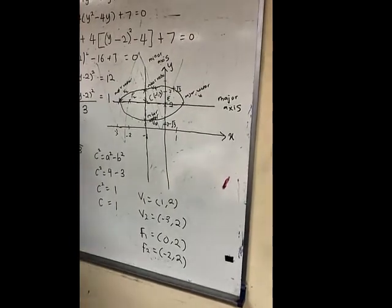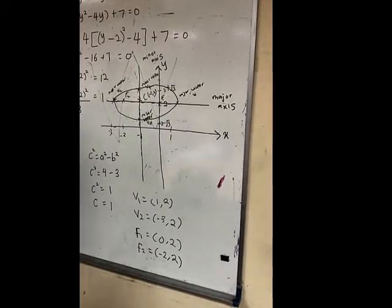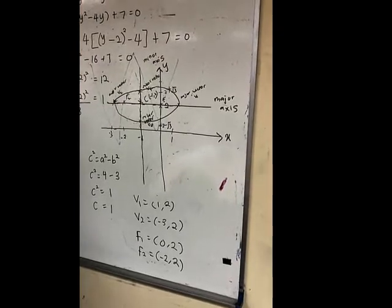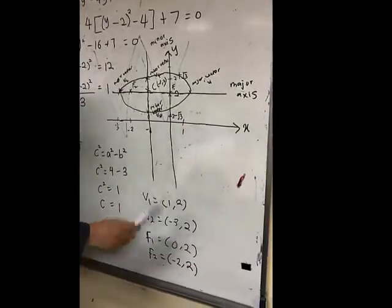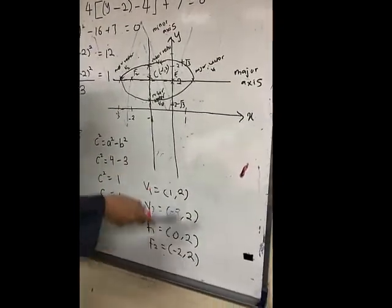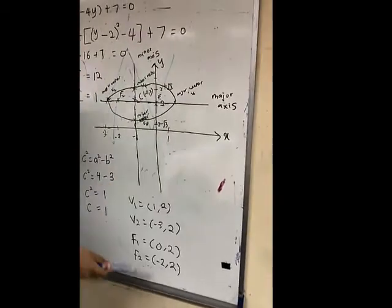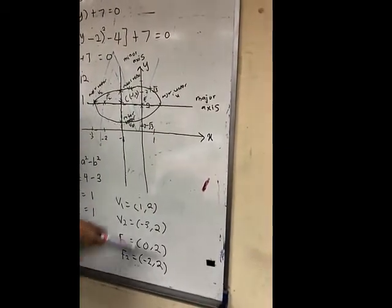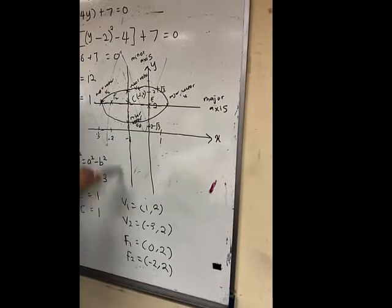And for foci, I use h plus C, which is -1 + 1. So I got F1 (0, 2) here. And F2, I got (-2, 2) here.